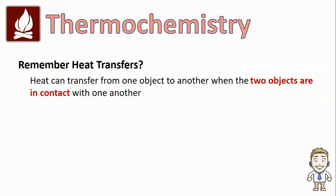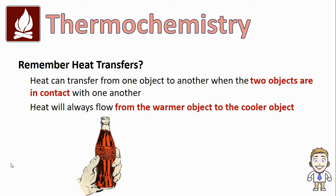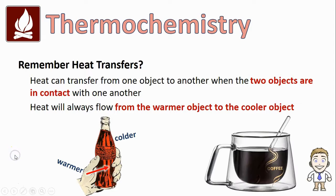Remember from the last video, heat can transfer when two objects of different temperatures come in contact with one another. The heat will always flow from the warmer object to the cooler object. Like when you pick up a cold bottle of soda, your warmer hand will transfer heat to the colder bottle of soda, or a cup of coffee with a cool spoon added in — the warmer coffee will transfer heat into the colder spoon.